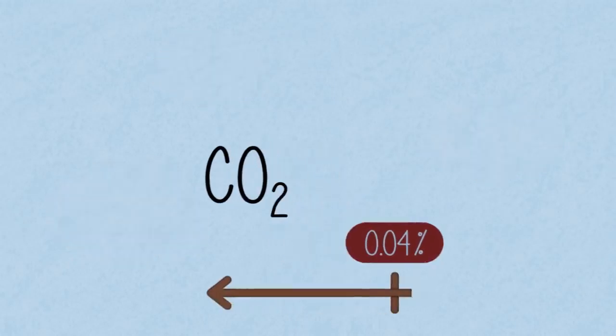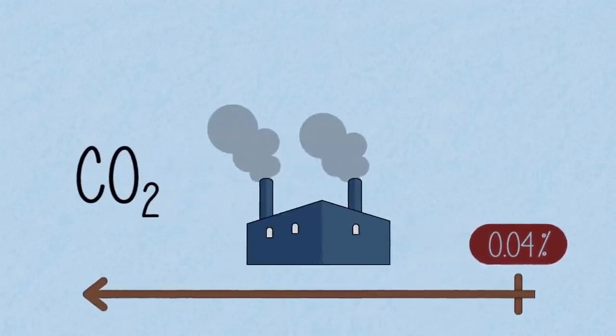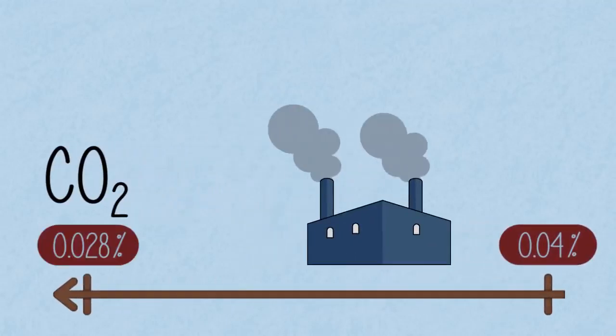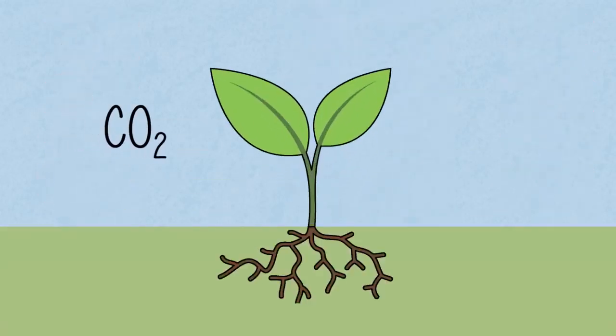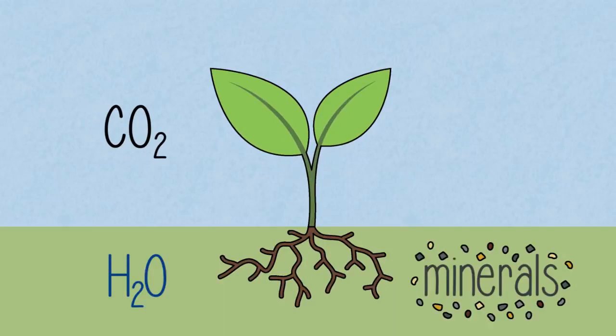But hundreds of years ago, before we started using fossil fuels, it was only 0.028%. Not much, you might think, but enough to enable plants to build up all the structures they need with a little help from the water and minerals they take up from their roots, and energy from the sun.